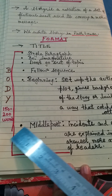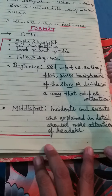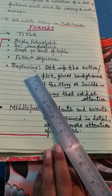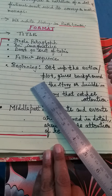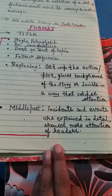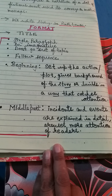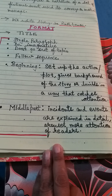The word limit for the story is 150 to 200 words. The beginning of the story should set up the action, give the background of the story, and catch the reader's attention. Your beginning should be very attractive, crisp, and catchy — by the start of the paragraph, the reader should be able to anticipate the theme of the story.